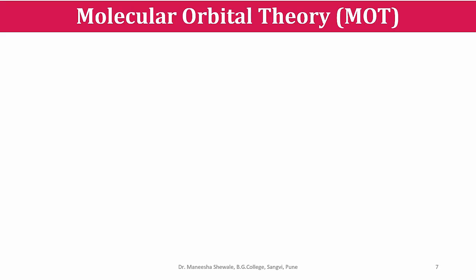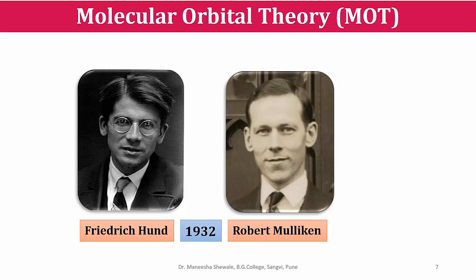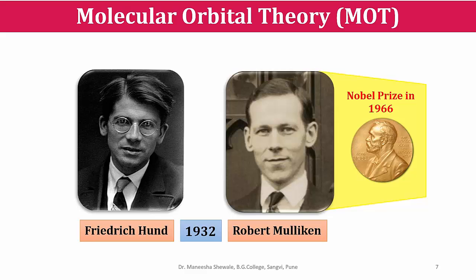The molecular orbital theory, abbreviated as MOT, was proposed by Frederick Hund and Robert Mulliken in 1932. For this, Robert Mulliken received the Nobel Prize in 1966.